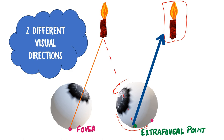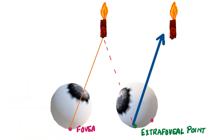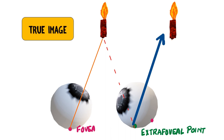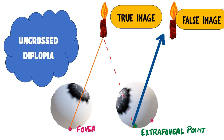These two different visual directions lead to diplopia or double vision. Out of the two images, the first image coming from the fovea of one eye is the true image, and the other image formed from the extra-foveal point is the false image. Since these images correspond to the location of the eyeball, the true image is on the right aspect and the false image is on the left. This type of diplopia is called uncrossed diplopia, seen in cases of esodeviation when the eyeball is deviated inwards.